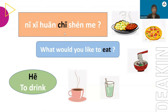吃 means 'to eat'. How about we replace 吃 with 喝 to make a new sentence. Let's try. 你喜欢喝什么? Can you guess what this means? 你喜欢喝什么 means: What would you like to drink? So: 你喜欢吃什么 — What would you like to eat? 你喜欢喝什么 — What would you like to drink?